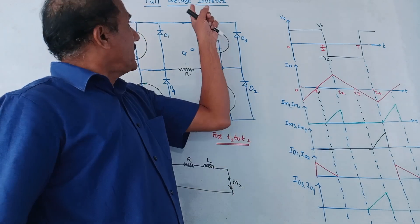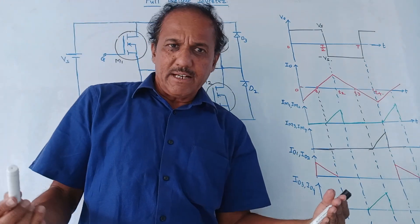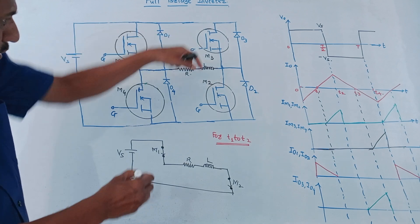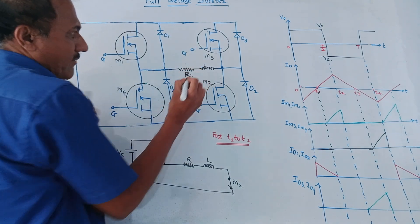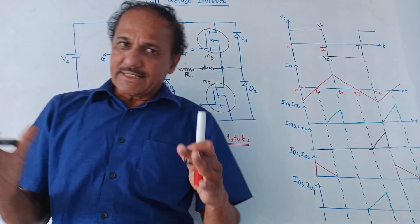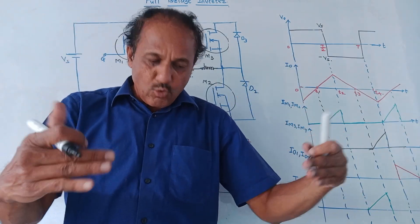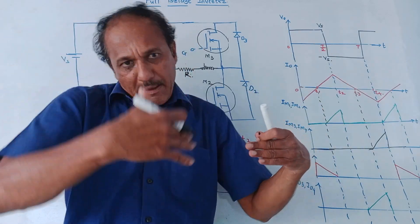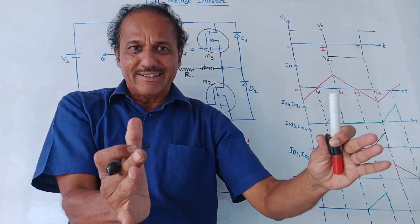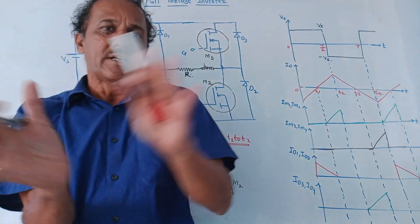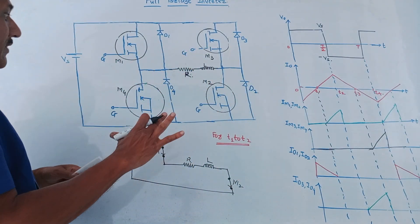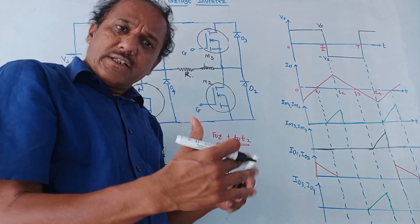Next part: full bridge inverter with RL load. As far as the circuit diagram is concerned, very small changes are there — in series with R, we have connected one inductor, so this is called inductive load or RL load. Basic concept: whenever you are using an inductor and a MOSFET turns on, during certain time periods the inductor will store charge. Whenever the MOSFET is switched off, whatever charge is stored in the inductor will be returned back to the source. This is the basic operation related to the storing property of the inductor.